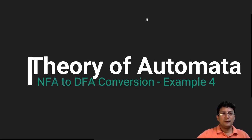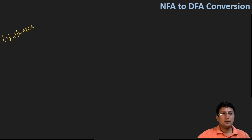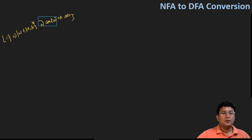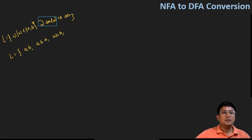Let's take one more example for the NFA to DFA conversion. The language is: w is an element of a-star, and w contains 'ab'. So the strings in this language will be 'ab', 'abb', 'aab', 'bab', and so on — it will be an infinite language. Any string that contains 'ab' has to be accepted by this automata.